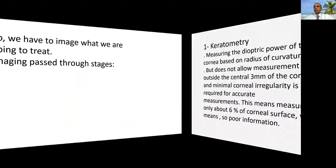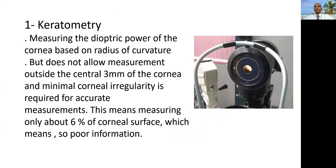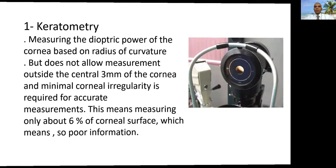So we have to image what we are going to treat. Imaging passed through stages. Historically, keratometry was the first that was invented, but it's only capable of capturing three millimeters of central cornea. And actually, this is so crude and represents only about 60 percent of corneal surface, which provides so poor information to be dealt upon.